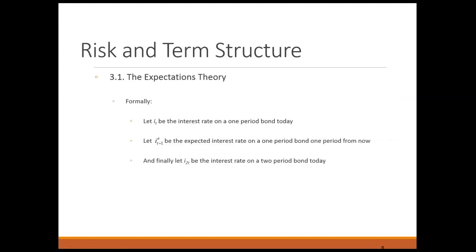Let's formalize this by first introducing some basic notation. Let I_T be the interest rate on a one-period bond today, and I_{T+1}^E be the expected yield on a one-period bond one year from now. By the time you make the decision, you only know today's interest rates — you have to form an expectation about tomorrow's. Finally, let I_{2T} be the interest rate on a two-year bond you buy today, which is also known.